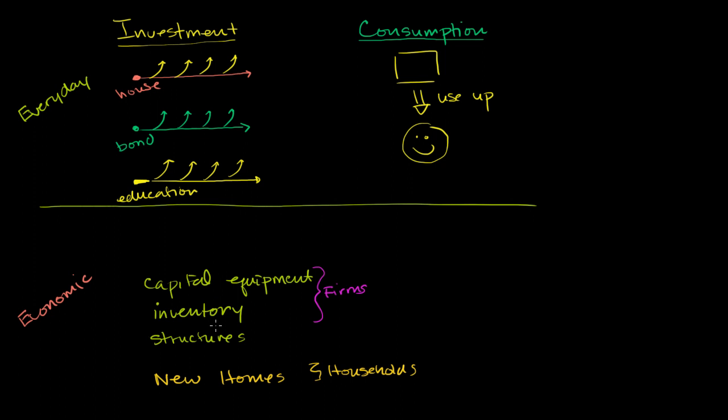So whenever we talk about any of these things, especially when we're talking about it in precise economic terms, it's the production of new capital equipment, new inventory, new structures, new homes. If I just buy a factory from someone else, that does not add to GDP. It would not be considered investment or consumption because I'm just transferring an asset from one person to another. It would only be added to GDP when it is first created.